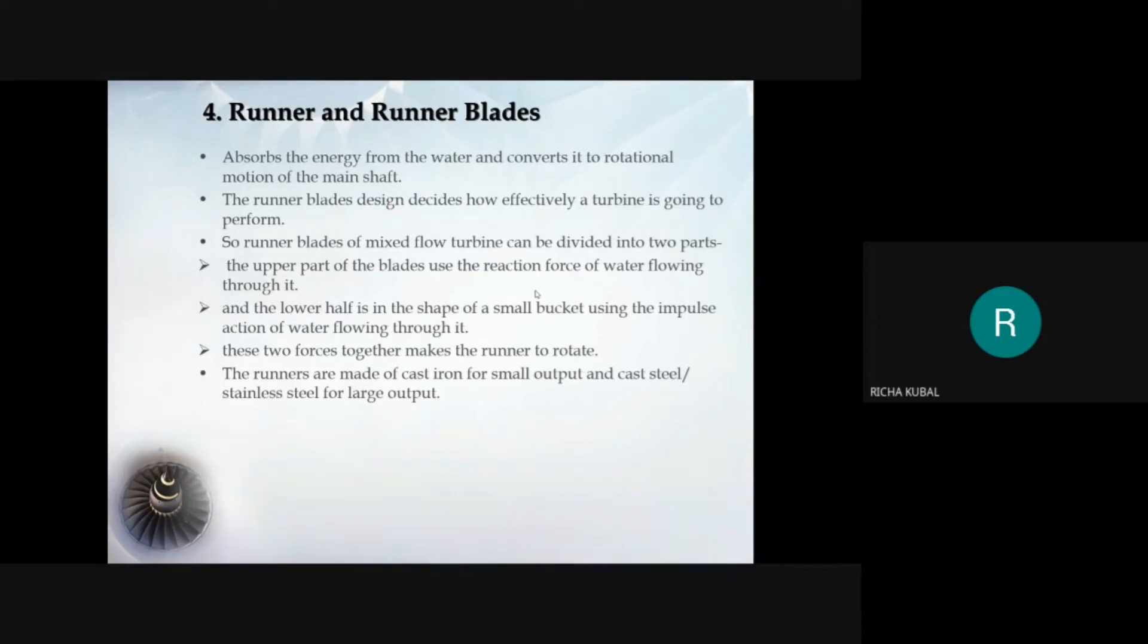The runner consists of suitable design blades of aerofoil sections so that water enters and leaves the blade without shock. Number of blades usually used on the runner is 16 to 24. When the number of blades are more, there is more water in contact with the blades, hence there is more friction loss. If the blades are less, there will be more loading on the blade, hence the number of blades used are around 16 to 24.